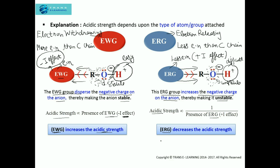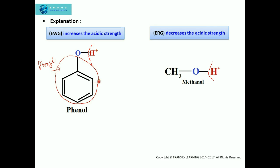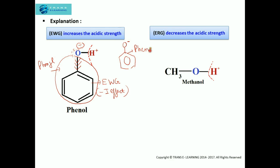Now, we have understood how the acidic strength varies with the presence of an electron withdrawing group and an electron releasing group. Now, let us understand in terms of phenol and methanol. In the case of phenol, the phenyl group is an electron withdrawing group. That means it will show minus I effect. Thus, due to this effect, it will withdraw electrons towards itself. Due to that, there will be spreading, or dispersion, of the negative charge on the phenoxide ion. The phenoxide ion is the phenyl group along with the oxygen carrying the negative charge. And due to the minus I effect of the phenyl group, there is dispersion of the negative charge. Due to that, the force of attraction between the negative charge on the ion and the proton will decrease, which makes phenol acidic.